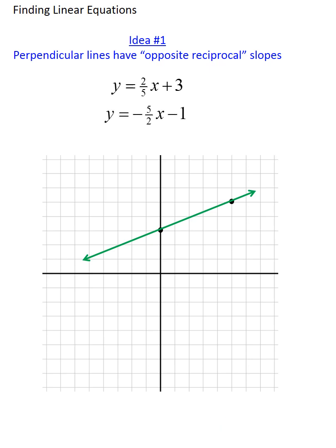Let's take a look at the second equation. It has a y-intercept of negative 1 and a slope of negative 5/2, which means we could get another point on that line by going over 2 and down 5.